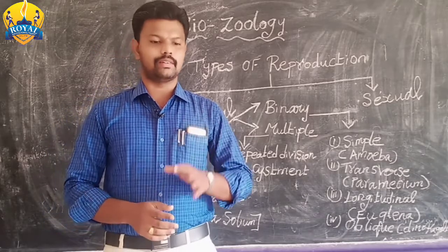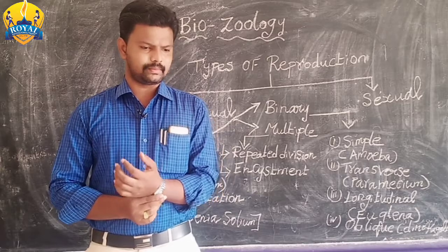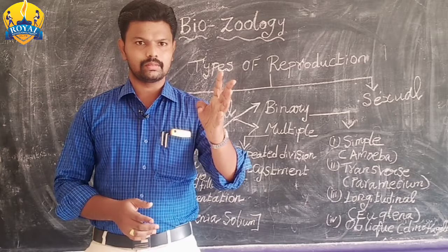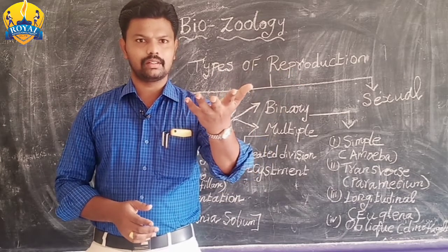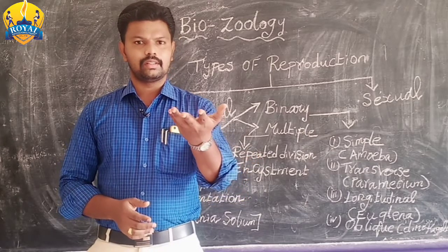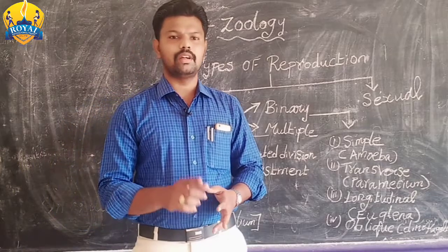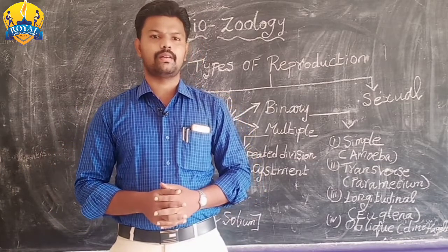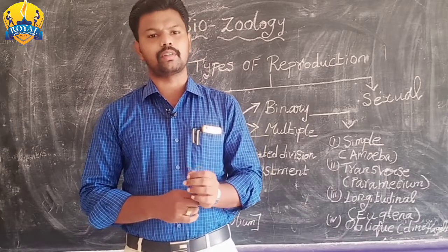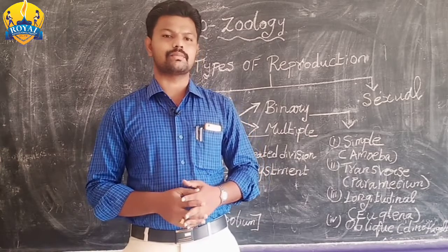Like that, how many systems are present in our body? Can you guess — three, four, five, seven? In our body, 11 systems are present. Let's do a quick review of all 11 systems.